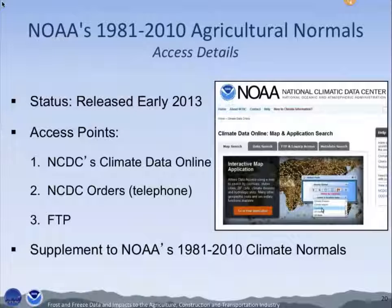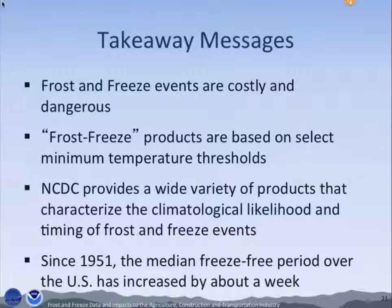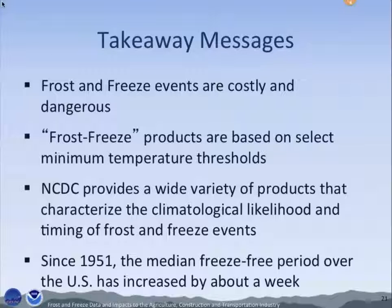Just to wrap up: these agricultural normals were released earlier this year. The flagship way to access them is Climate Data Online, and Stuart Henson will be presenting on that. You can also go to NCDC Order — our user engagement services — by telephone or email, and there's FTP access as well. These are supplements to the 1981-2010 standard normals. The four key takeaway messages: frost and freeze events are costly and dangerous; products are based on select minimum temperature thresholds — we're measuring air temperature, not putting thermometers in tomatoes; we provide a wide variety of products characterizing the climatological likelihood and timing; and we're seeing about a week increase in the growing season.